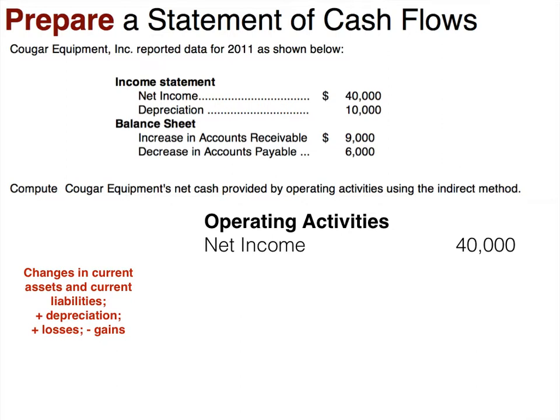We are using the indirect method of a statement of cash flows, which means we're going to start with net income and adjust it from the accrual basis to the cash basis of accounting. In the operating activity section we analyze current assets and current liabilities, add back depreciation, add back losses, and subtract gains. So the first thing I like to do is get gains and losses out of the way.